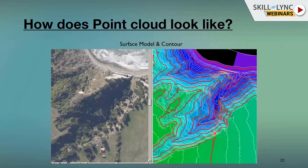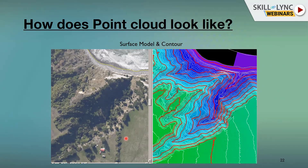After generating the orthorectified images and DSM, the point cloud data gives XYZ information for each point. To create a surface model, the software takes the nearest elevation values and triangulates them. With millions or billions of points, the surface can be triangulated and visualized as very smooth surfaces. On the left, DSM is overlaid with images; on the right, DSM or DEM or DTM is shown with contours.